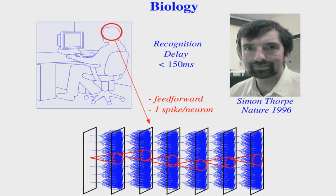However, the brain doesn't use frames. Our eyes don't take pictures, and our brain does not process a sequence of pictures. We have a retina that produces spikes, which travel through layers in the visual cortex, sending spikes from one layer to the next. Neurons receive spikes, accumulate enough charge, and trigger the next spike. It's a feed-forward computational event-driven structure with significant feedback paths as well, but absolutely free of frames.